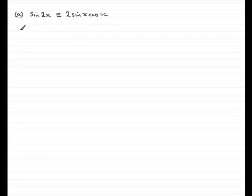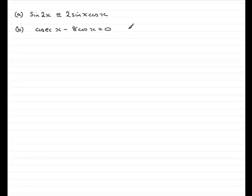For part b, what we've got to do is solve the equation cosec(x) minus 8cos(x) equals 0, and give our solutions for x between 0 and pi.